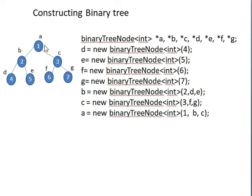Any node you construct for a binary tree has three features: the left child, the right child, and the node element. The node element can take any data type; here we use integer. Any node must point to other nodes - for example, the root node points to two other nodes B and C, its left and right children. Since nodes point to other nodes, all nodes must be considered as binary tree node pointers. To construct nodes A, B, C, D, E, F, G, you need seven nodes total.